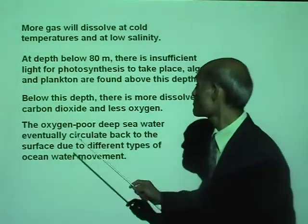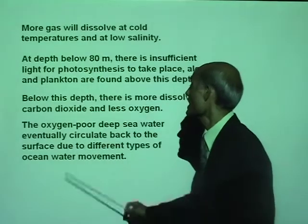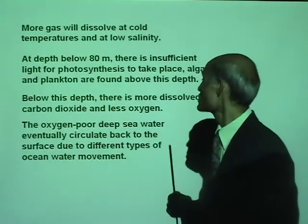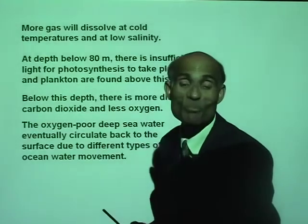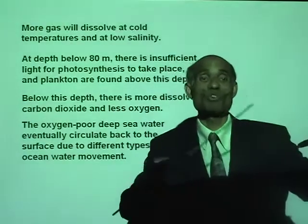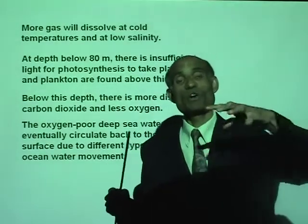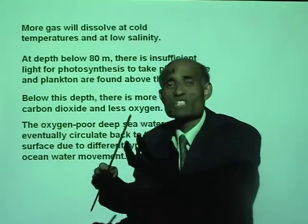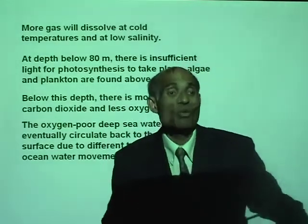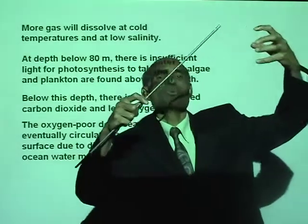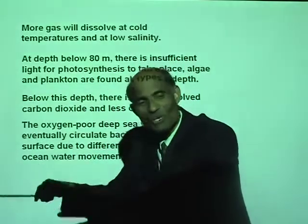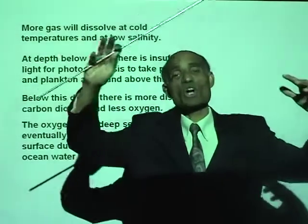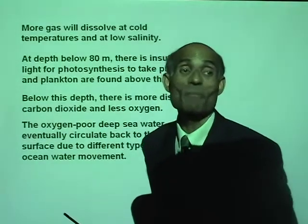The oxygen-poor deep sea water eventually circulates back to the surface due to differences in water movement. Very often, the water starved of oxygen will come to the surface, become rich in oxygen, and go back down. The waters of the sea are in a constant, continuous state of motion.